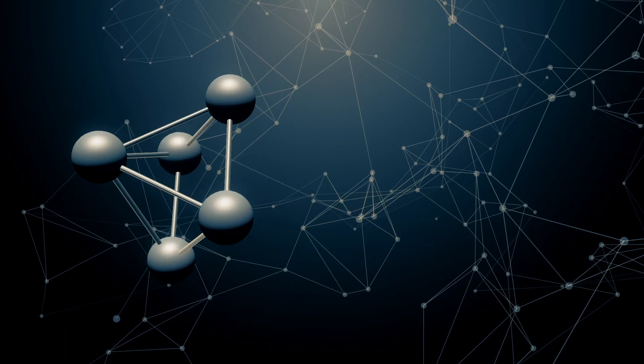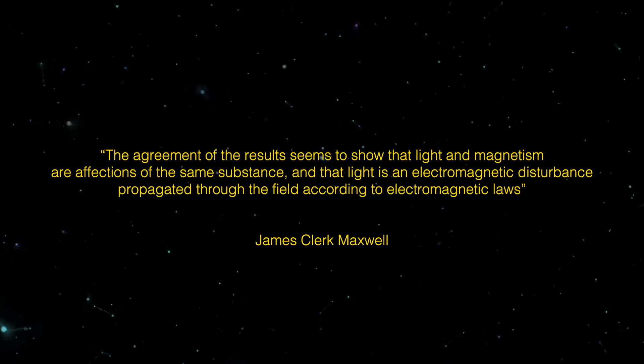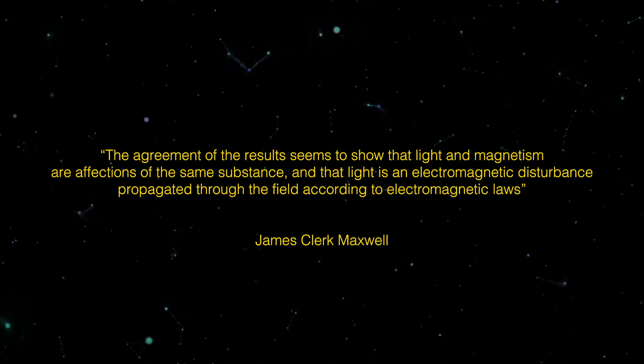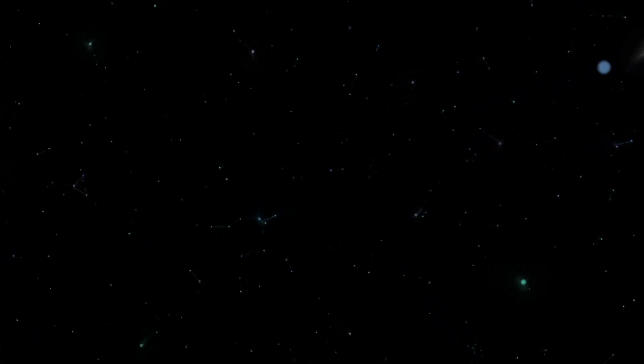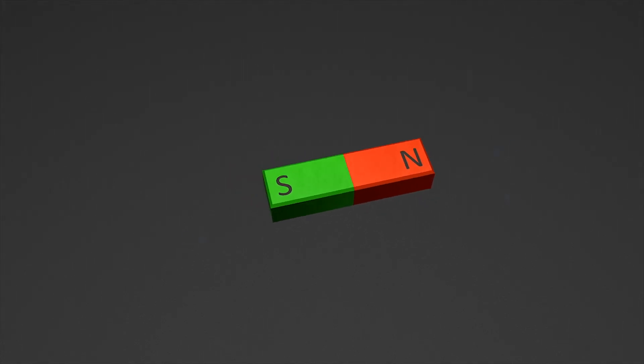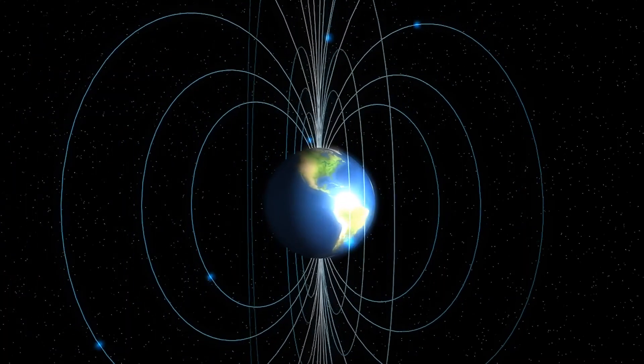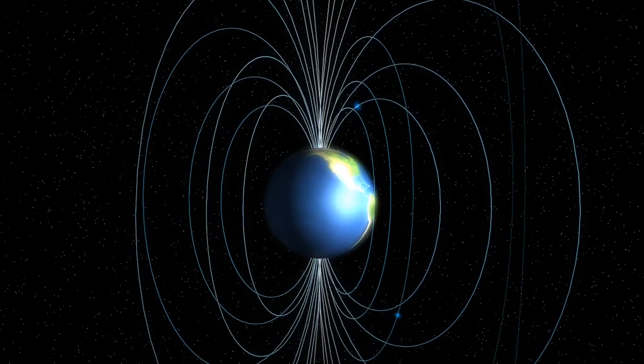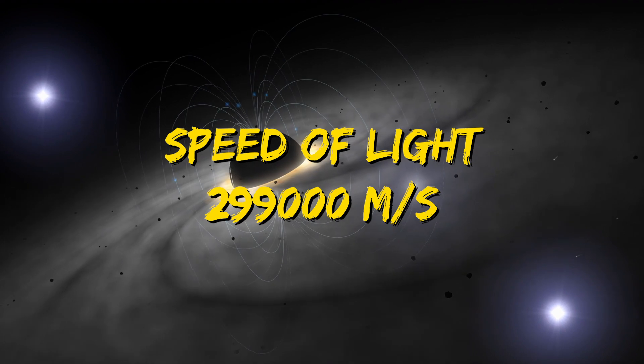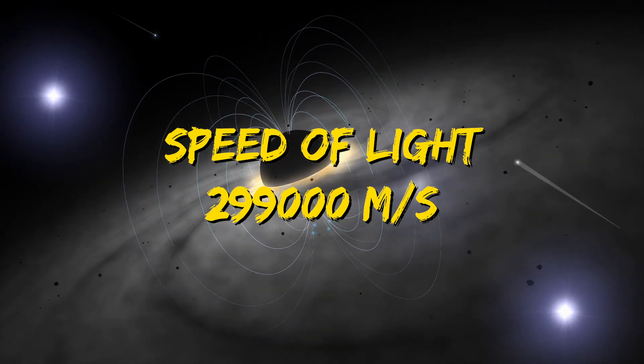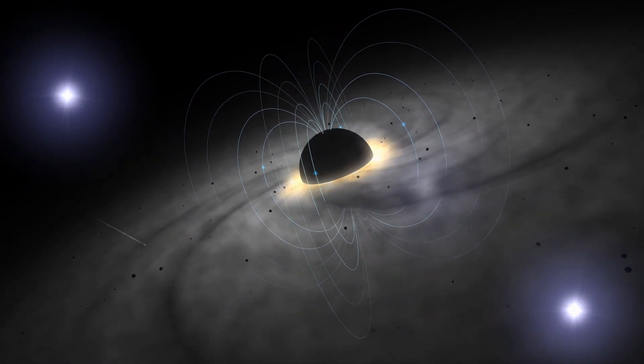To quote Maxwell himself, quote, The agreement of the results seem to show that light and magnetism are affections of the same substance, and that light is an electromagnetic disturbance propagated through the field according to the electromagnetic laws, unquote. From both this realization and the calculations that supported it, Maxwell was able to determine that electric and magnetic fields move through space in waves. He also proved that both of these fields moved at the speed of light, which is approximately 299,000 meters per second. When considered in tandem, these two realities give quantum field theory the legs on which it stands on.